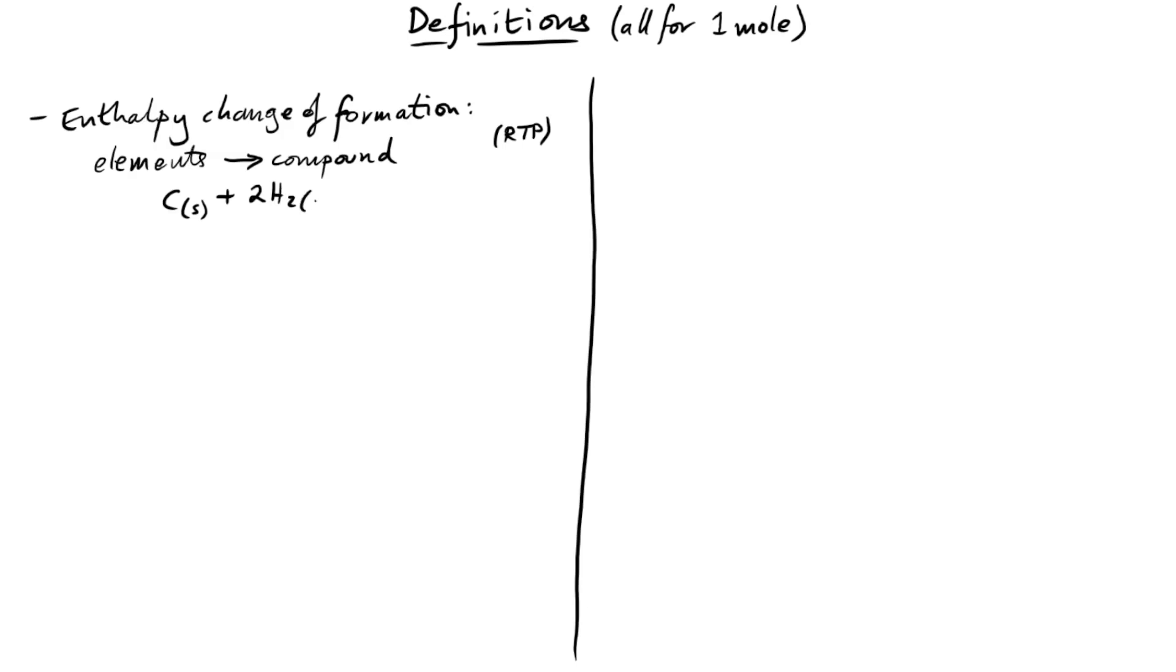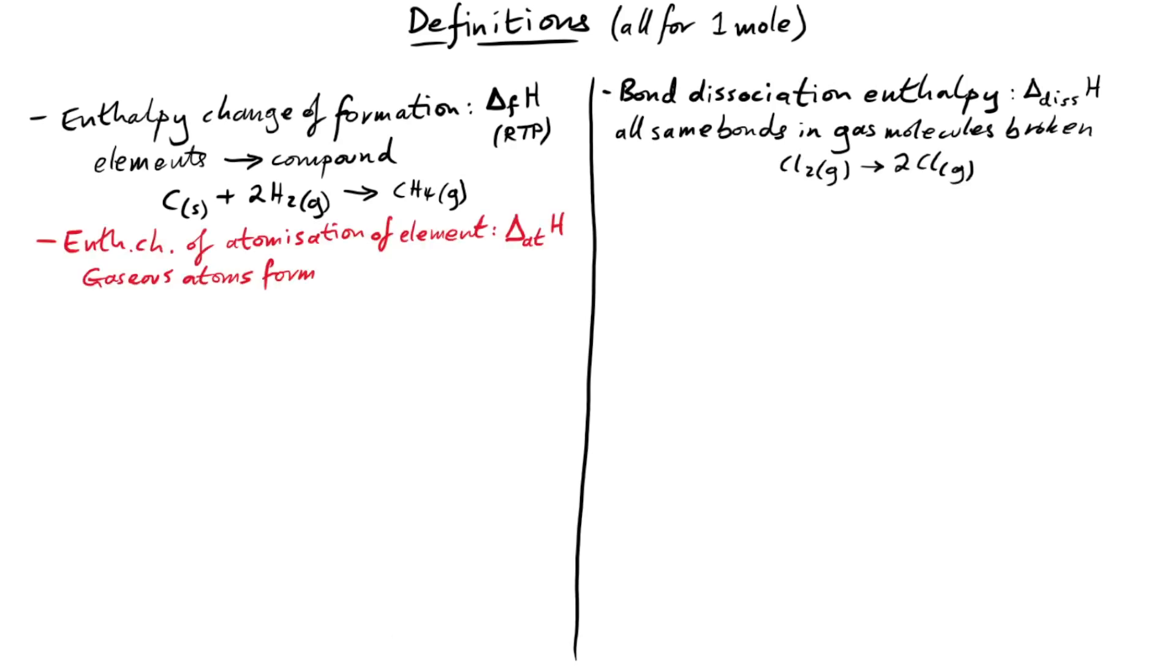So first one, enthalpy change of formation, very important one. This is the enthalpy change when a mole of a compound is formed from its elements in their standard state and standard conditions. Almost the opposite of that, we have bond dissociation enthalpy. This is when all the same bonds in one mole of gas molecules are broken. For example, diatomic chlorine split into just the individual chlorine atoms.